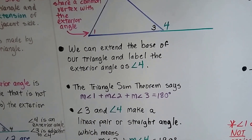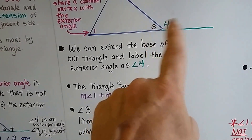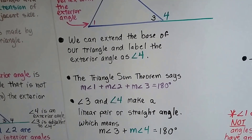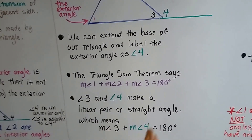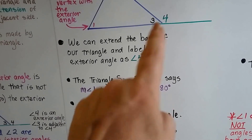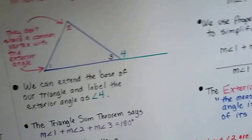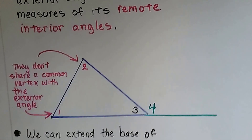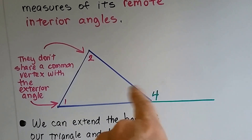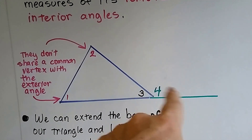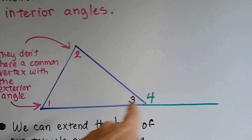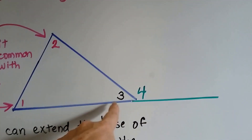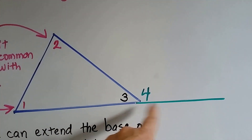Angle three and angle four make a linear pair, or a straight angle. That means that the measure of angle three and the measure of angle four is going to be 180 degrees. A straight angle is 180 degrees — that's what a straight line is. So these two angles, three and four, are supplementary to each other, because on a straight line this one plus this one is going to be 180 degrees.